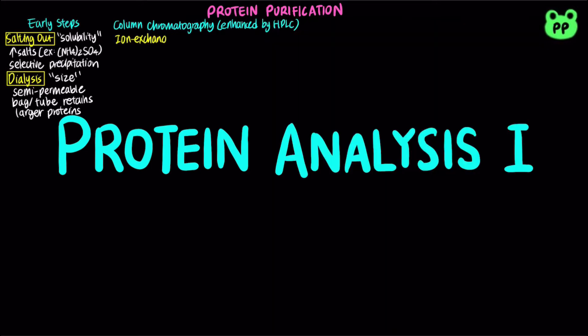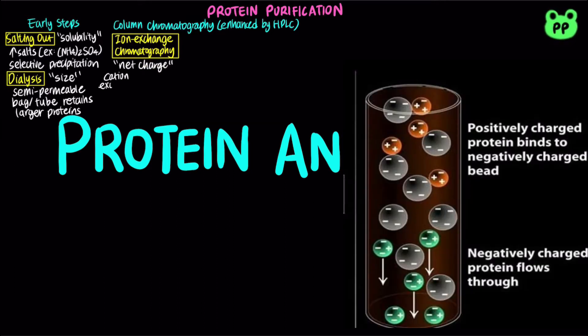Ion exchange chromatography separates proteins based on their net electric charges. The column consists of synthetic polymer known as resin with bound charged groups. In cation exchange chromatography, the column is negatively charged, typically consists of carboxymethyl cellulose, abbreviated as CMC. As a result, proteins with net negative charge elute first.